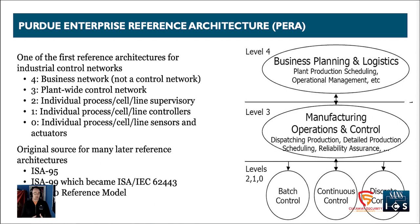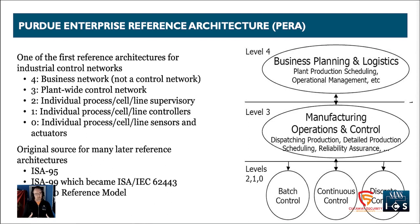If we want to secure a control network, we need to understand how it was built. We need to understand the requirements that went into its design. Most organizations are going to build their control networks and processes leveraging the Purdue Enterprise Reference Architecture, also called PARA or the Purdue model. To understand this, I like to start explaining it from the inside and moving out.